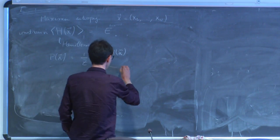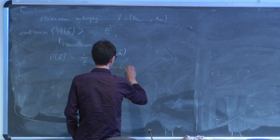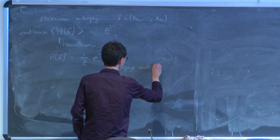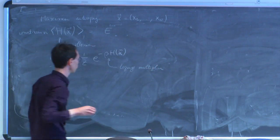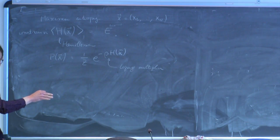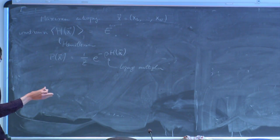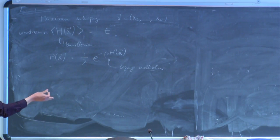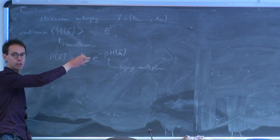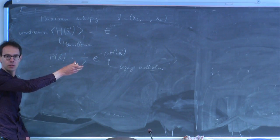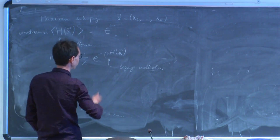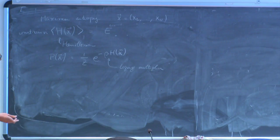This beta here is the Lagrange multiplier that's conjugate to the energy. And if you look at this, it looks very familiar — this is just a Boltzmann distribution. So in other words, the Boltzmann distribution is the maximum entropy distribution that is consistent with the given value for the mean energy of the system. That's the example from physics that we're most familiar with.